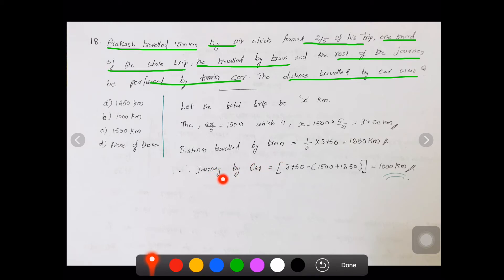We have to find the journey by car. Therefore, journey of the car is equal to total distance minus 1500 by air plus 1250 by train, so when we minus this we will get 1000 km. That is the distance covered by the car.